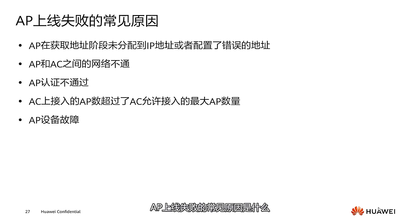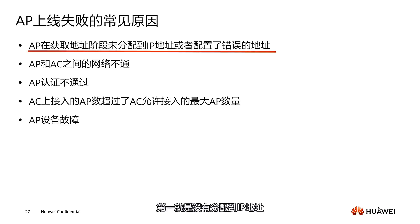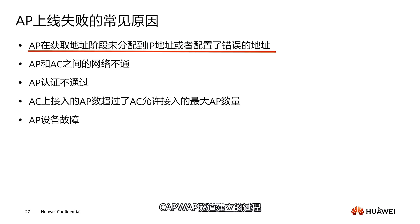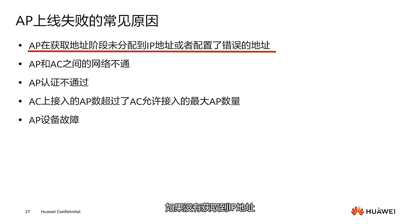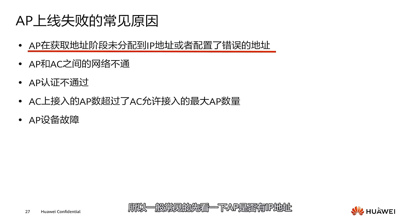Let's look at the common reasons for AP onboarding failures. The first reason is not being assigned an IP address or being configured with the wrong address. Going back to the CAPWAP tunnel setup process, during the DHCP interaction, if an IP address is not obtained, communication is impossible. So commonly, first check whether the AP has an IP address.